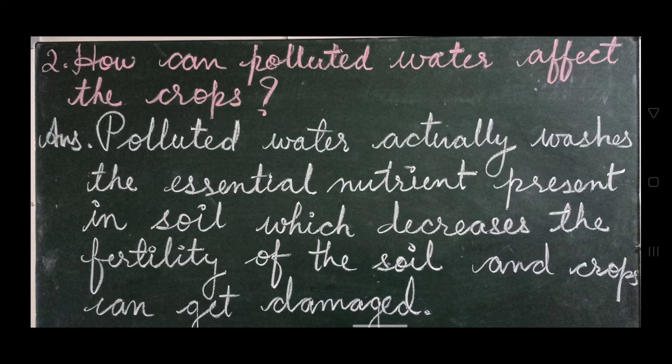Question number 2: How can polluted water affect the crops? Answer: Polluted water washes away the essential nutrients present in the soil, which decreases the fertility of the soil and crops can get damaged.